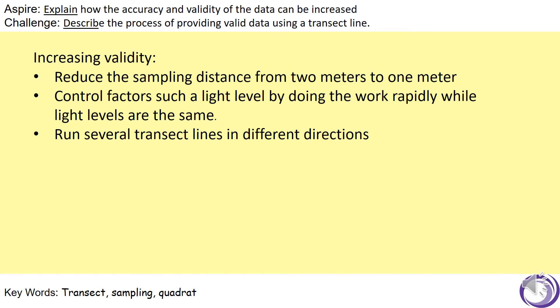We need to run several transect lines. With the trunk of the tree in the center, instead of running a single tape measure, we could increase the validity of results by repeating measurements in different directions using points of the compass, for example.